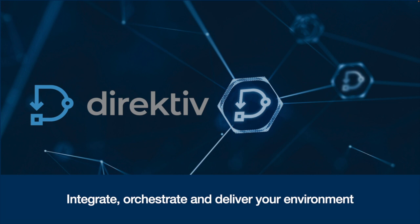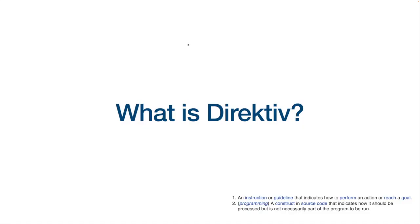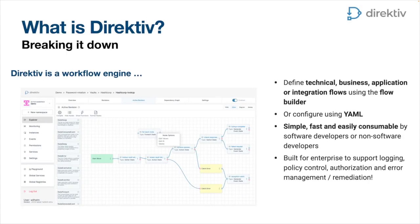In this first introduction, we're going to explain what Directive is, how you use Directive, and the basic principles of the Directive solution. In a programming language and software development world, a directive is a construct in source code that indicates how things should be processed, but it's not necessarily part of the program that actually runs it. And if we look at what Directive is all about, this represents very clearly what we do and how we do it.